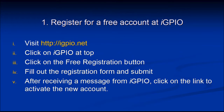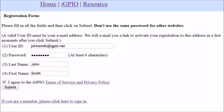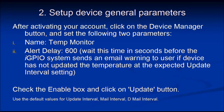For the first step, you register at IGPIO.net for a free account using the free registration button, fill out the registration form, and submit. You will receive a message from the IGPIO website and click on the link in the email to activate the account. That is all there is to registration.